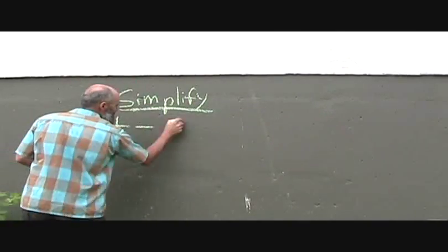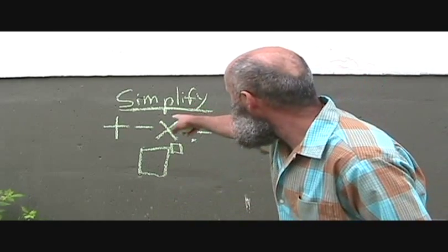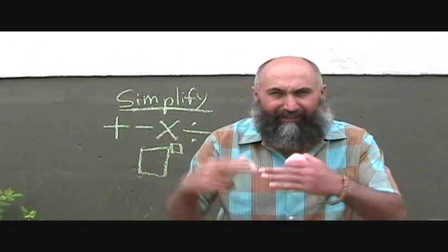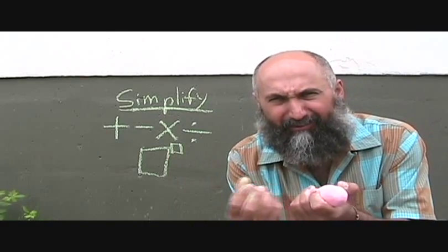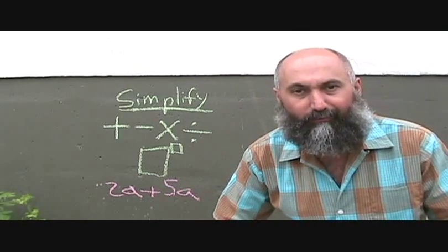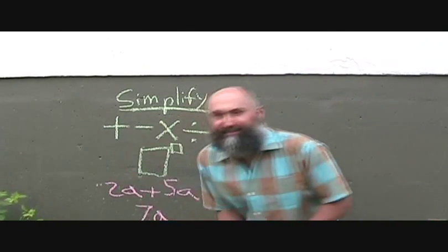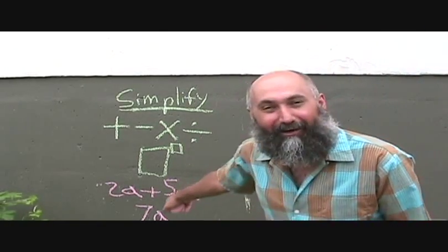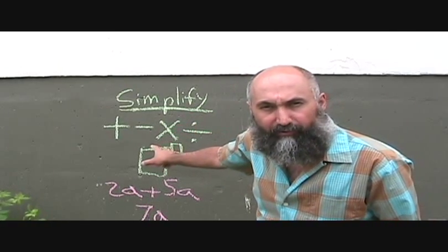We've been talking about the equal sign in the previous couple of videos. Let's take a look at where mathematics is going and how what we've learned so far will apply to the real world. What we've learned so far is basically simplifying — using addition, subtraction, multiplication, division, and the power symbol to simplify terms. For example, 2a plus 5a equals 7a. We've done a lot of these simplifications.